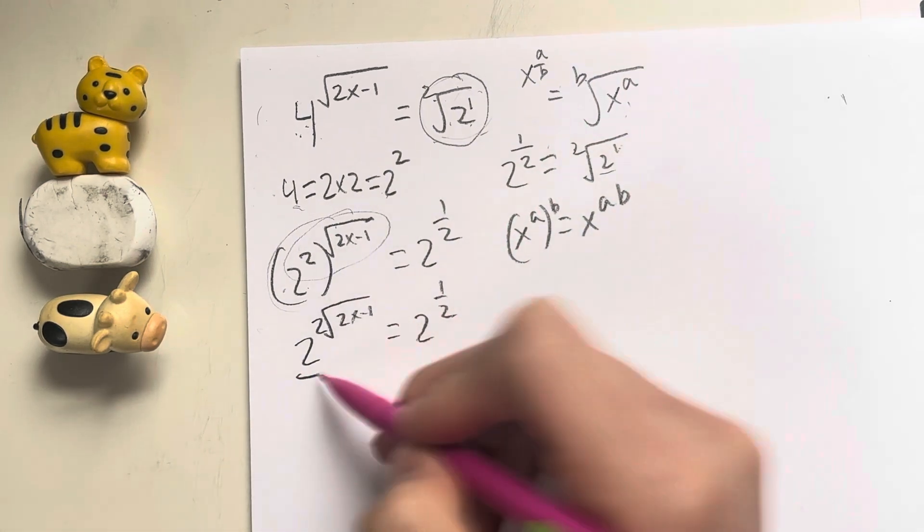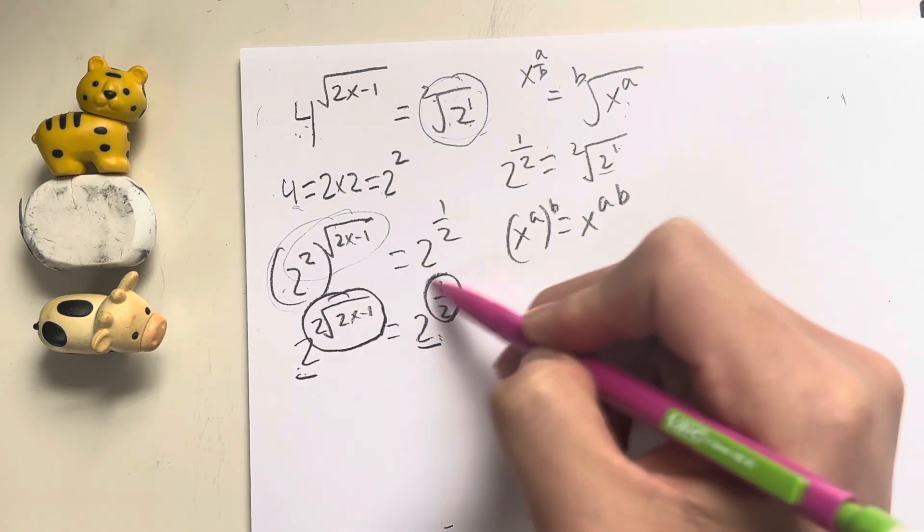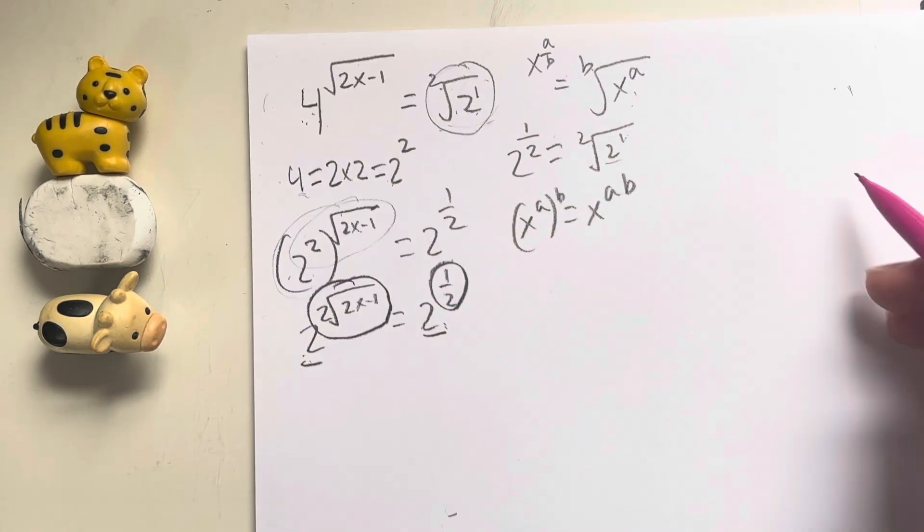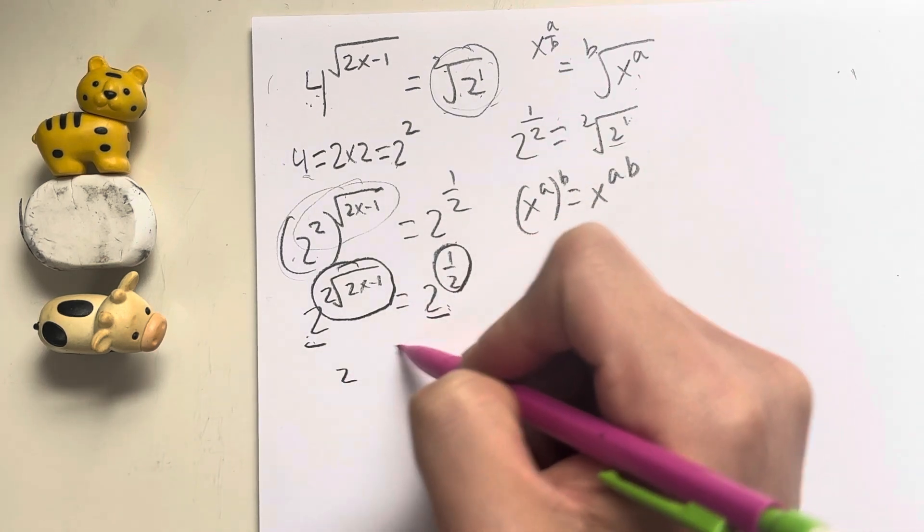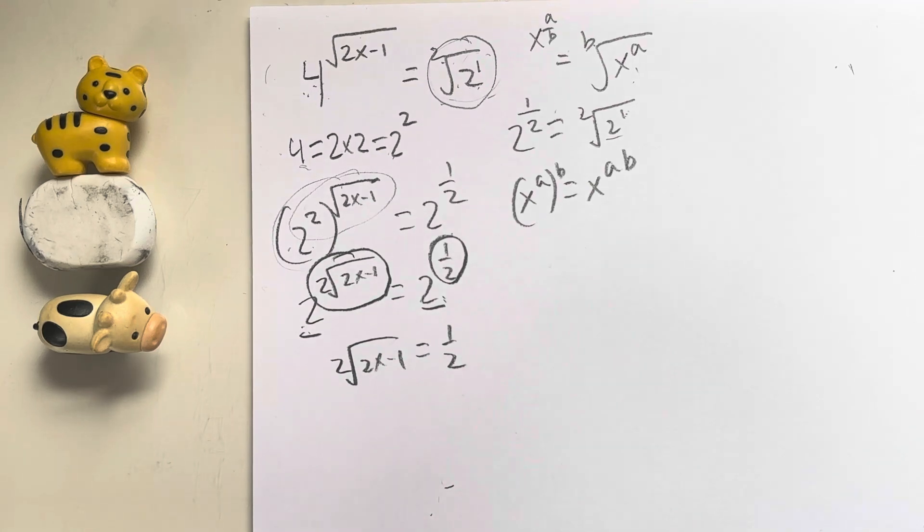Now, because both my numbers are raised to the second power, I could technically set their exponents equal to each other. So in this case, I end up with 2 times the square root of 2x minus 1 equals 1 half. And this is a fairly easy equation to solve.